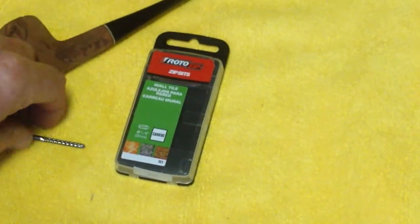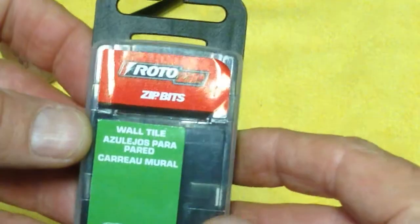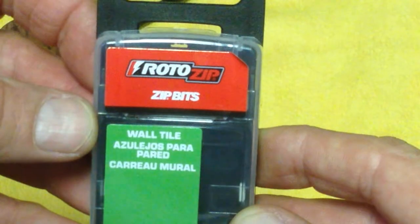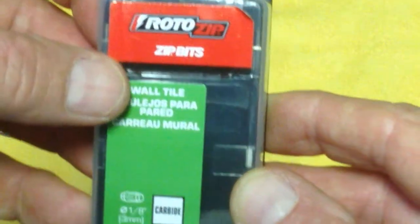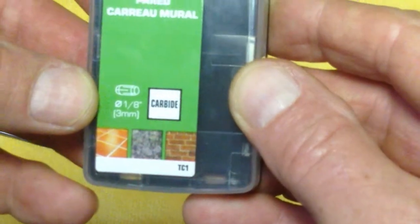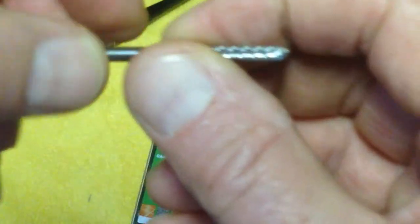The burr that I'm going to use is a new burr that I've never used before. This is the package it came in. I got it at Home Depot. Roto-Zip, Zip Bits, Wall Tile, 1 1⁄8 inch carbide. And it's a very aggressive burr.